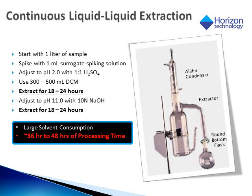Continuous liquid-liquid extraction consumes 300 to 500 milliliters of extraction solvent and requires a double extraction — once with the sample adjusted to pH 2 and a second extraction with the same sample adjusted to pH 11. Each pH adjustment step requires 18 to 24 hours, meaning that sample preparation time can take from 1.5 to 2 days.